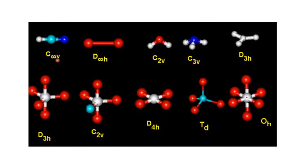C∞V is for linear asymmetric molecules and D∞H for symmetric linear molecules. Water is C2V, ammonia is C3V (triangular pyramidal). Trigonal planar is D3H, trigonal bipyramidal is D3H. If one lone pair is present, it becomes a see-saw model: C2V. Square planar is D4H, tetrahedral is Td, and octahedral is Oh. If you haven't subscribed, please subscribe to the channel and click the like button.